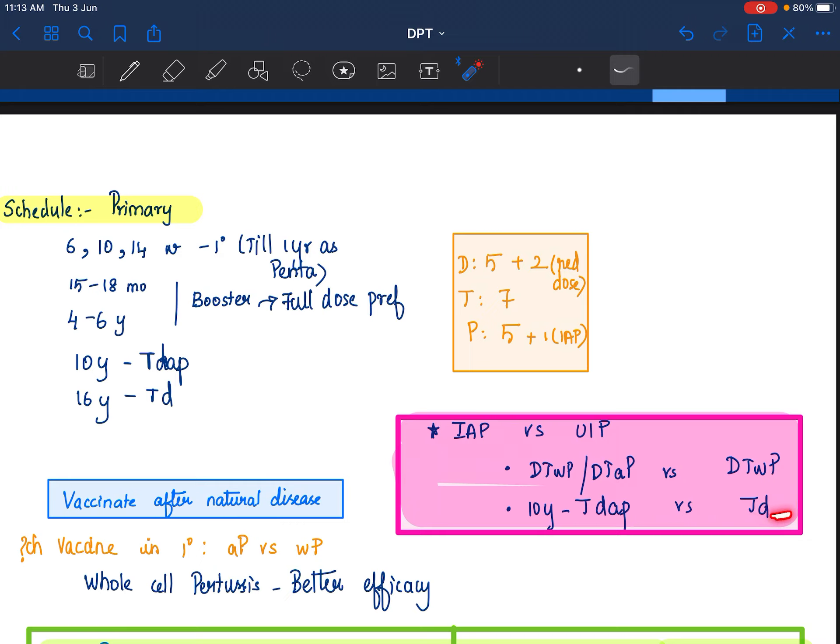These are the main two differences. So, if you put everything together for diphtheria, this child, if the child is receiving all of this, would have received 5 doses of diphtheria and 2 of reduced dose diphtheria here and here.